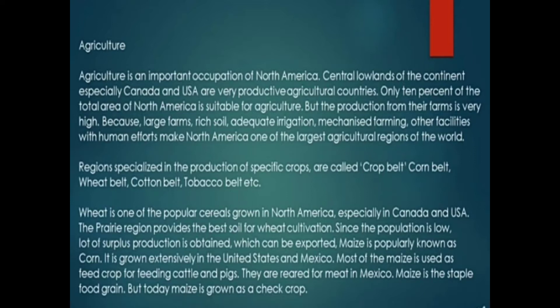Regions specialized in the production of specific crops are called crop belts — corn belt, wheat belt, cotton belt, tobacco belt, etc. Wheat is one of the popular cereals grown in North America, especially in Canada and USA. Since the population is low, a lot of surplus production is obtained which can be exported.